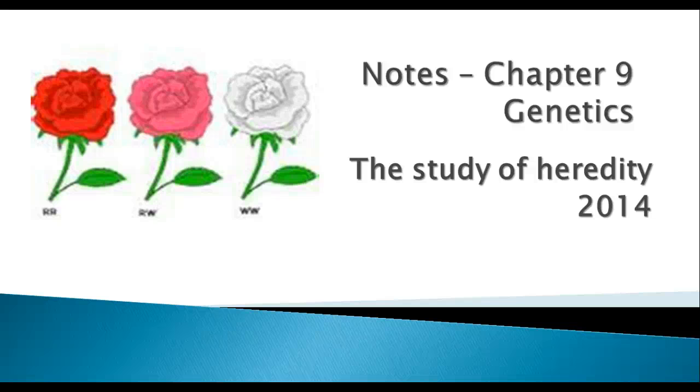This is the second set of notes on genetics, chapter 9. In this section we're going to talk about dihybrid crosses and exceptions to Mendel's principles.